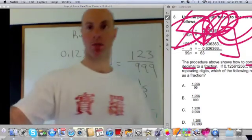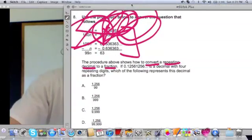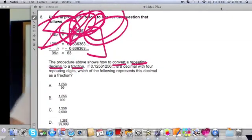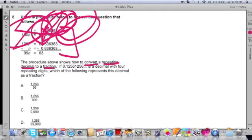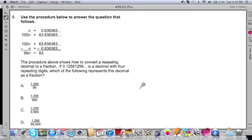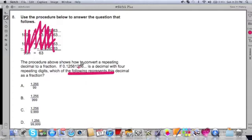Now if we go back to the problem, let's take a look at the problem again. The procedure above, well we're not even worried about the procedure above. We're just going to focus on this one portion of the question, and that was how to solve it. And it says, if this is your repeating decimal with four digits repeating, which of the following represents this decimal as a fraction? So we're going to turn this repeating decimal as a fraction.